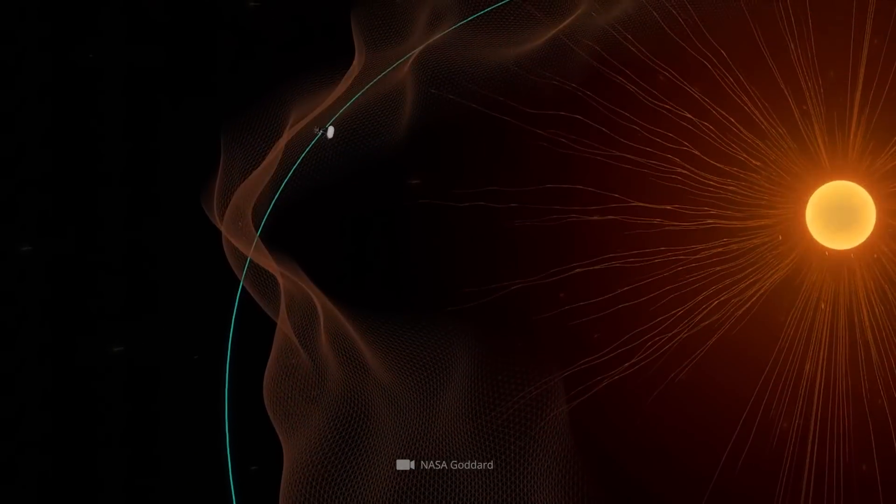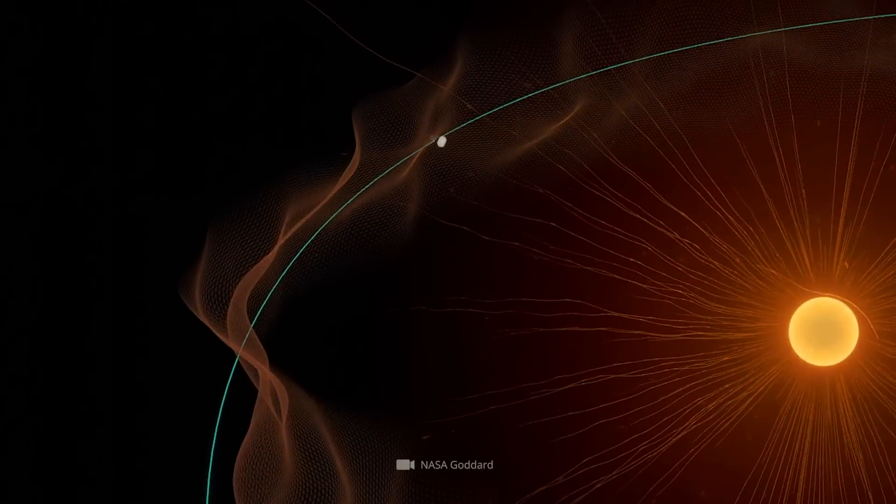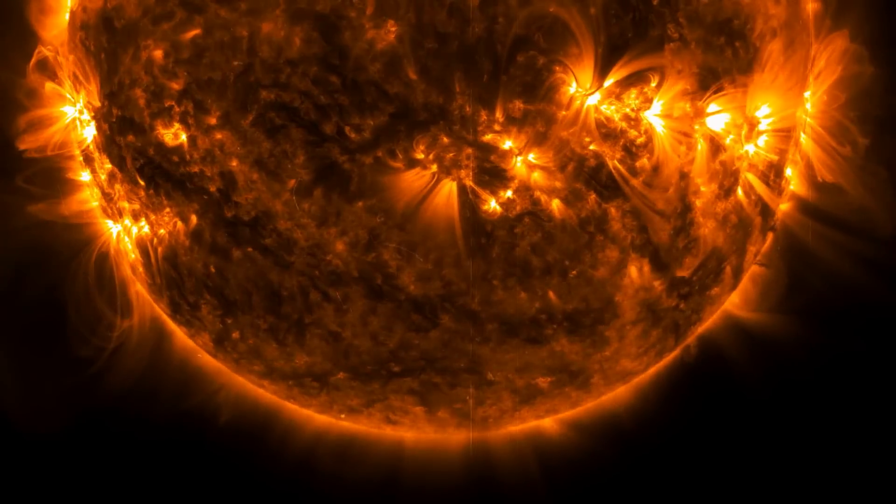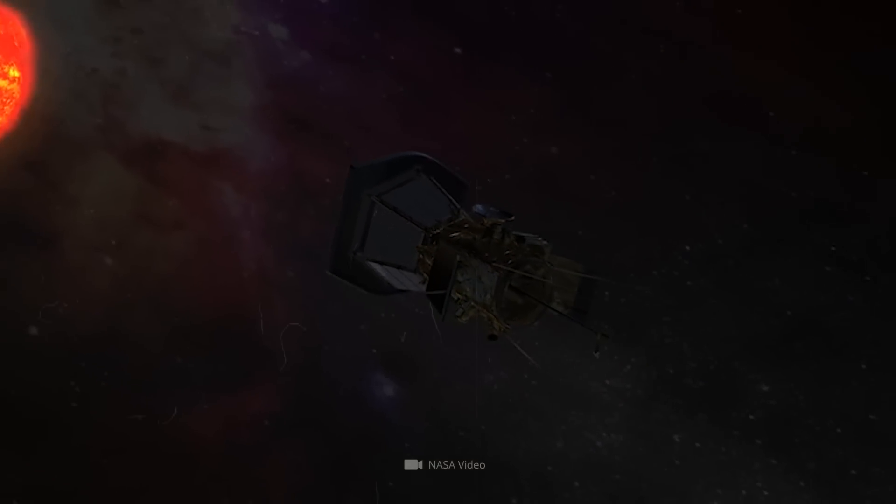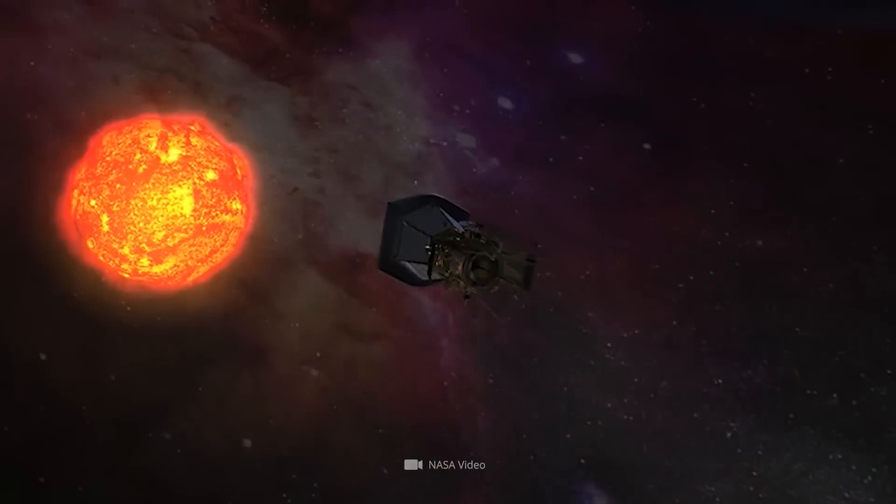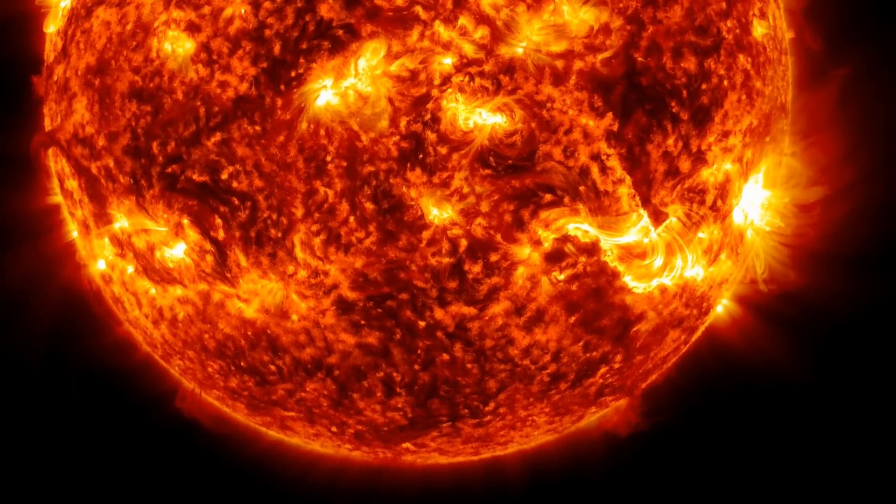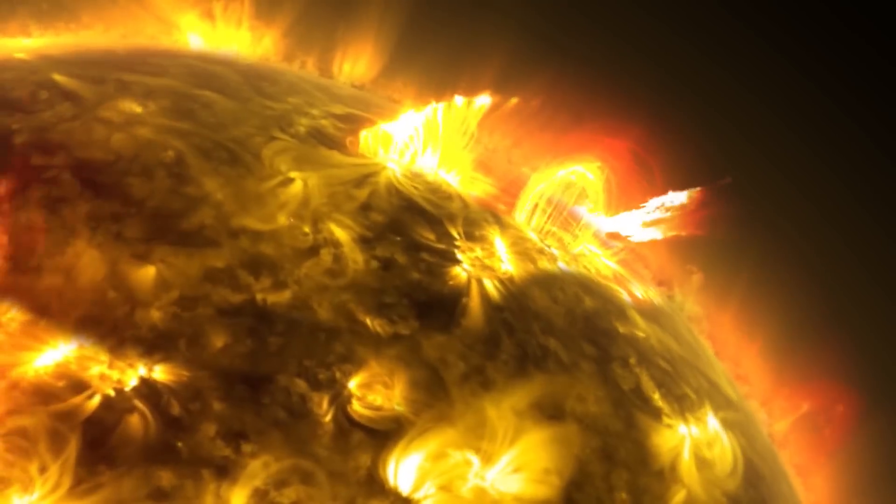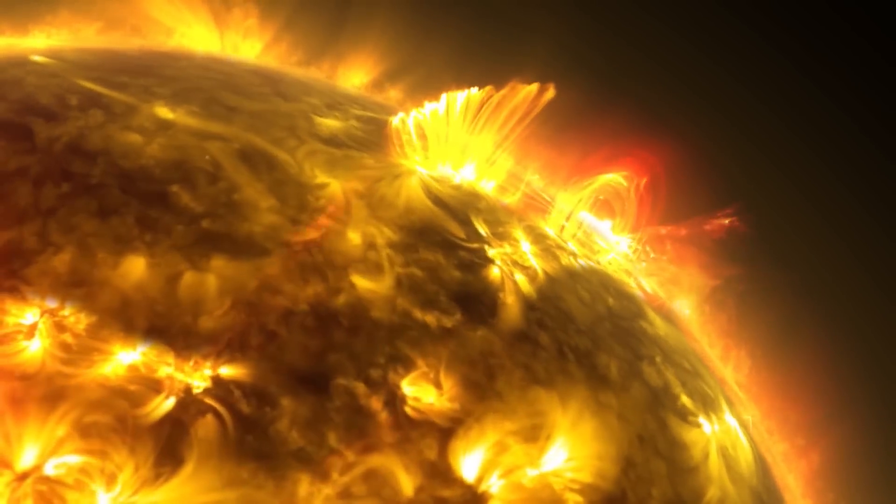In detail, this solar boundary is defined by the point at which the sun's magnetic fields are no longer strong enough to hold back the streams of particles emanating from it. And in numbers, this means nothing less than that Parker Solar Probe approached our star to within 13 million kilometers. No other spacecraft has ever come so close to the sun, and in view of this groundbreaking milestone, NASA experts spoke of a monumental moment for solar research.